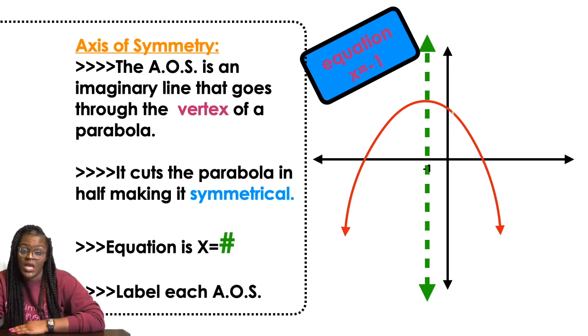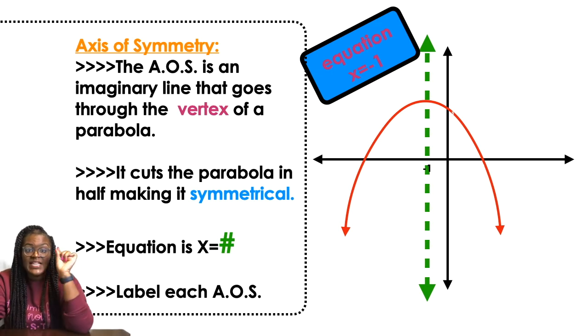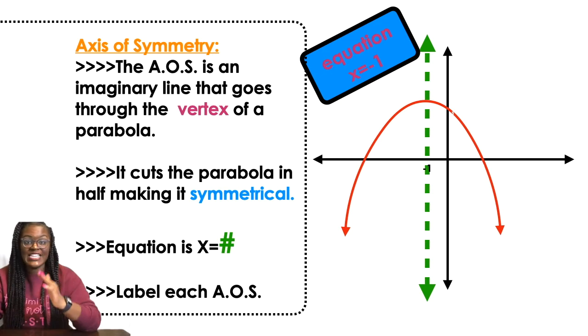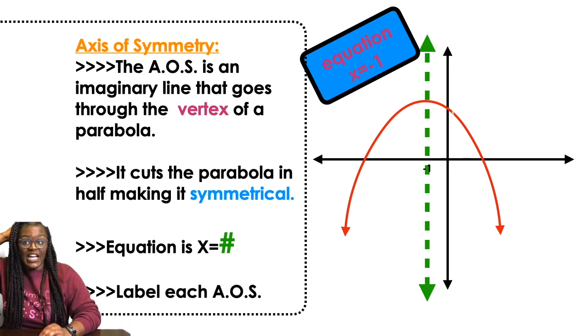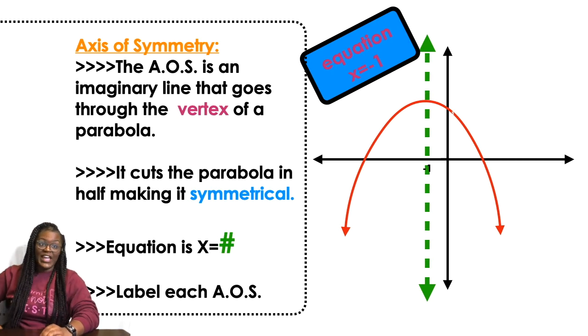Always x equals a number. Don't just put the number, put the equation of the line. It's a vertical line. You should learn this when you're doing linear equations. Vertical lines are always x equals a number.